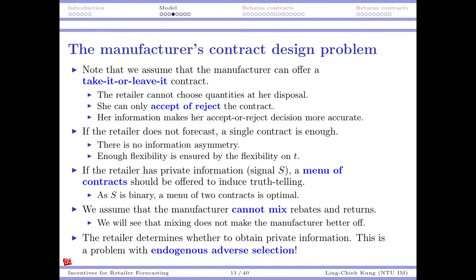If the retailer does demand forecasting and gets a private signal S, then by the revelation principle, we should offer a menu of contracts that induces truth-telling, allowing the manufacturer to optimize its expected profit. Since S is binary, a menu of two contracts would be optimal — we want two types of retailers to choose different contracts, so there is no reason to offer three contracts. This is the revelation principle in action.